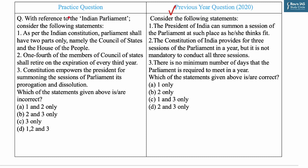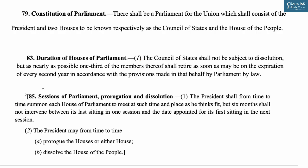Let's take up today's practice MCQ. The question says: 'With reference to the Indian Parliament, consider the following statements and identify the incorrect statements.' Statement one says: 'As per the Indian Constitution, Parliament shall have two parts only, namely the Council of State (Rajya Sabha) and House of the People (Lok Sabha).' Statement two says: 'One-fourth of the members of the Council of State shall retire on the expiration of every third year.' Statement three says: 'The Constitution empowers the President for summoning the session of Parliament, its prorogation and dissolution.'